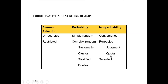For quota sampling, it is similar to purposive, but there's a quota and once the quota is met, you no longer accept responses from that group. For example, if you have a quota of 50 males and 50 females, once you've got 50 male respondents, you stop surveying males and focus only on getting responses from female respondents.